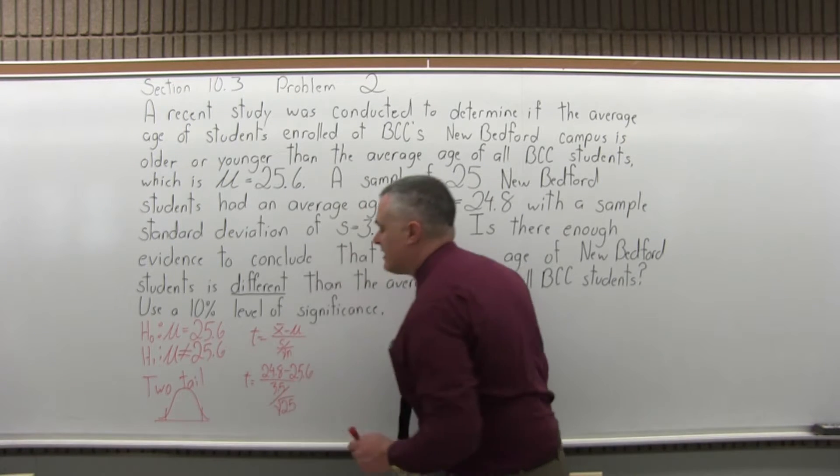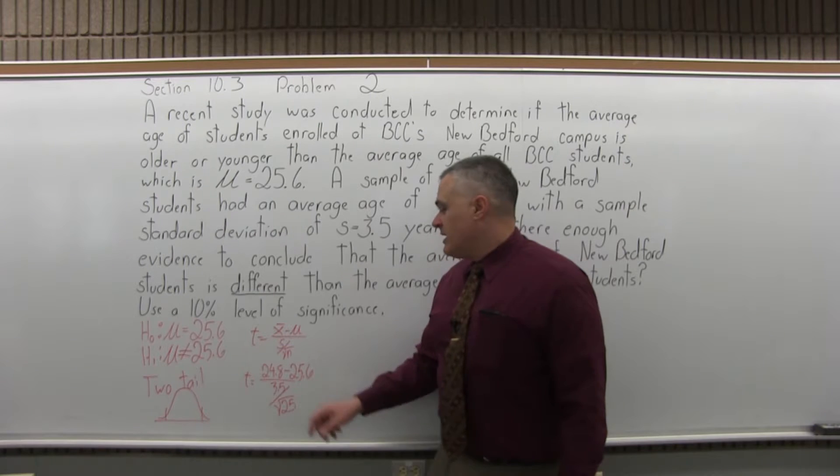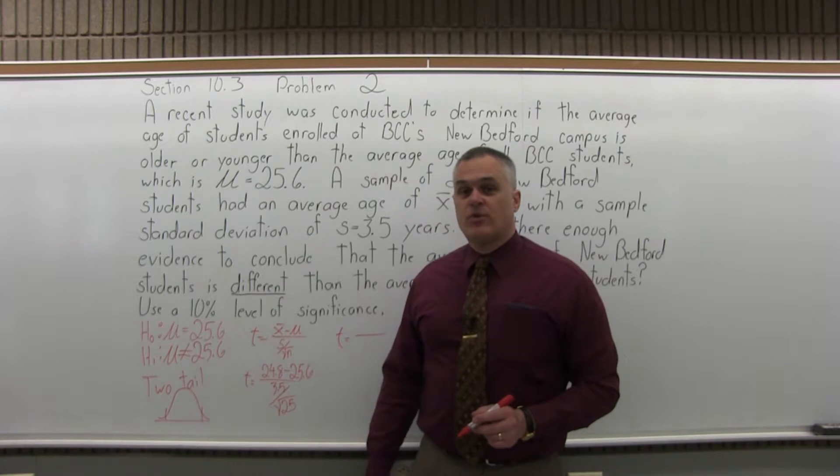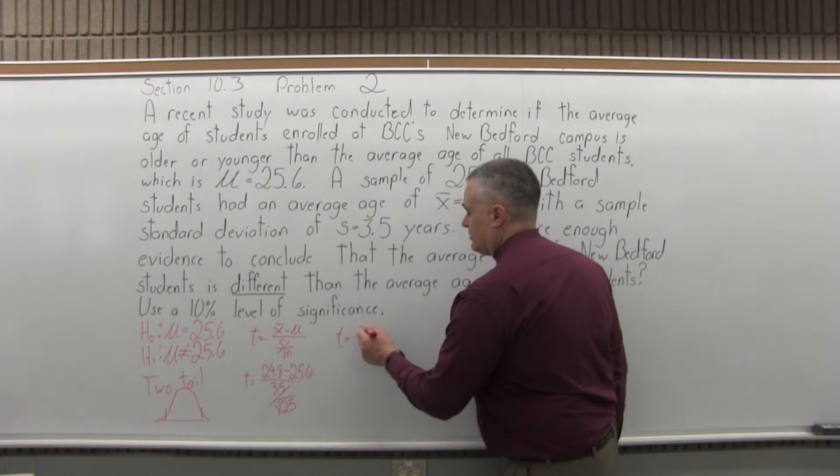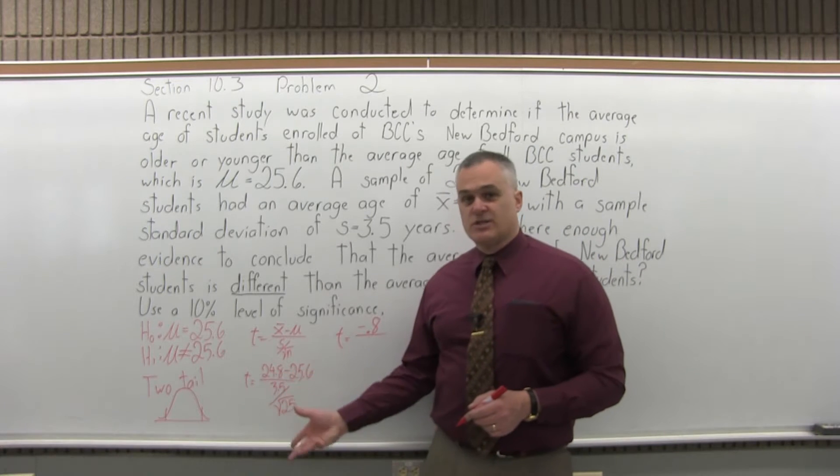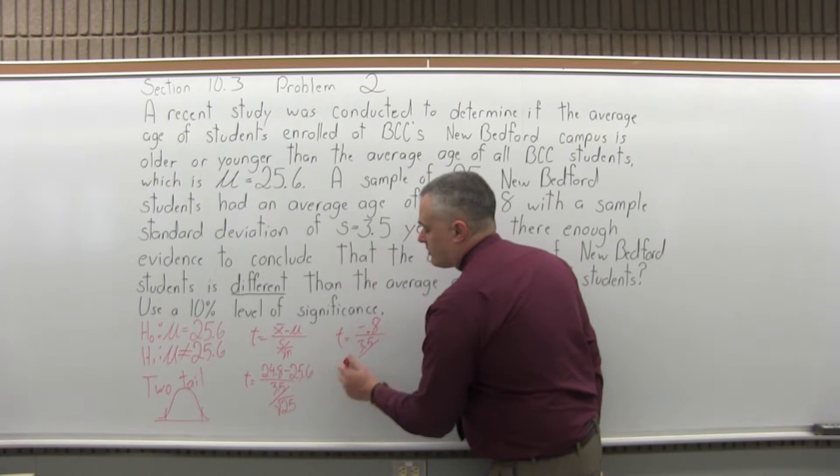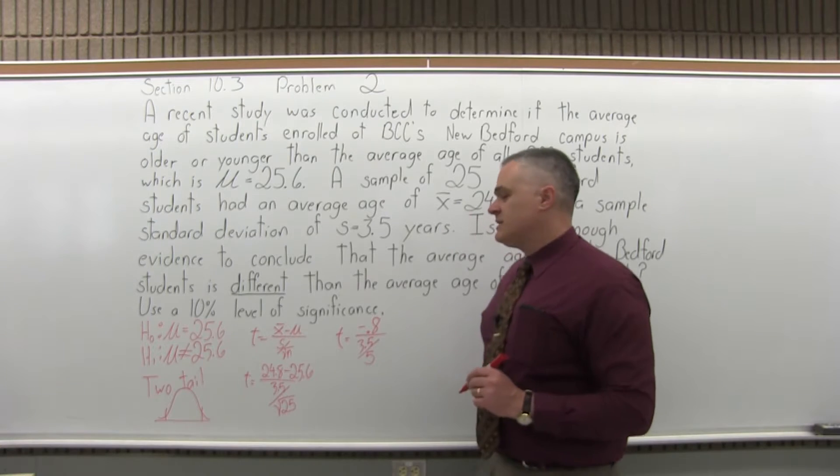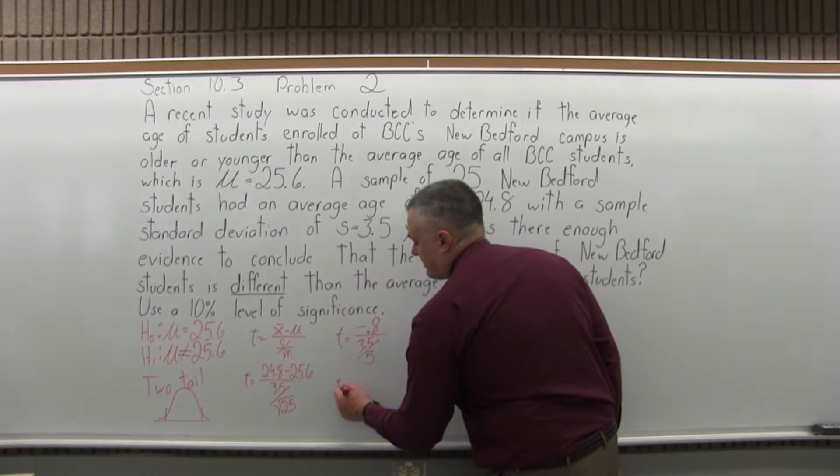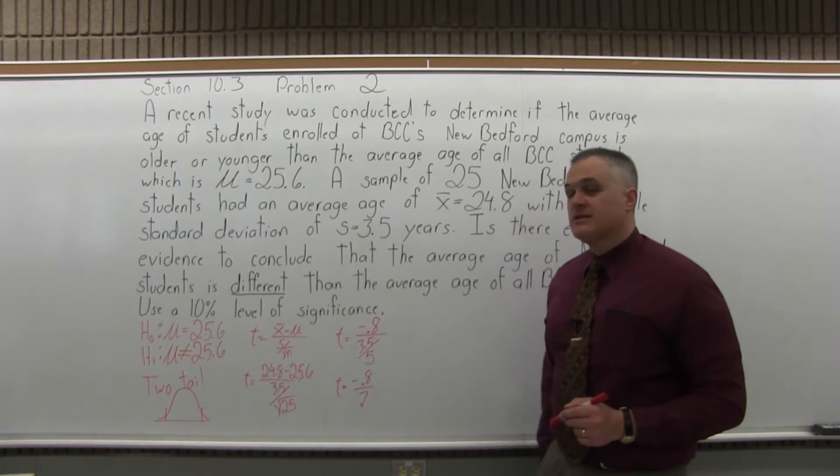So now what I can do is start to simplify the computation down. In the numerator, I can do that right now. 24.8 minus 25.6 is negative 0.8. So don't just put 0.8. In this case you would wind up with the right answer either way coincidentally, but in general you want to pay attention to positive or negative. And then 3.5 over, I can do the square root of 25, that comes out to a nice whole number, is 5, because 5 times 5 is 25. And then I can simplify the denominator a little bit further.